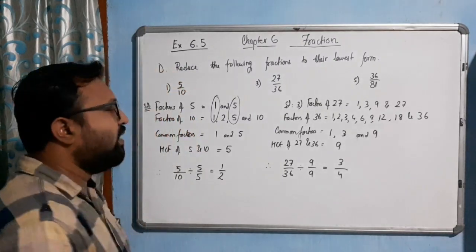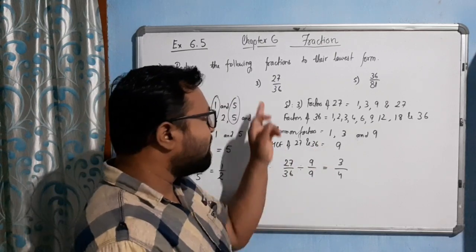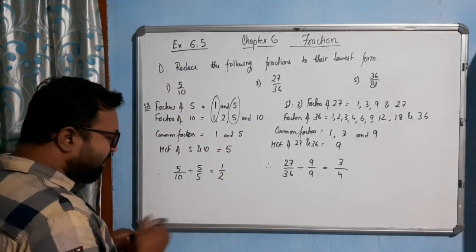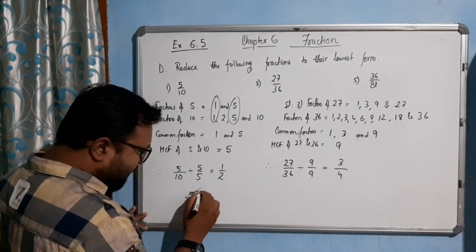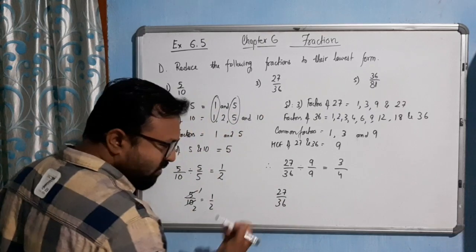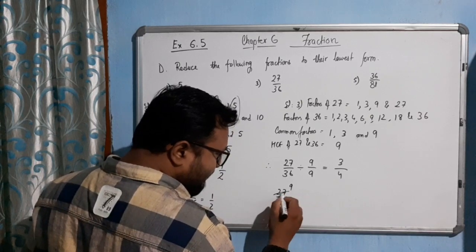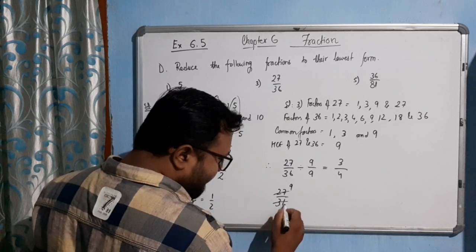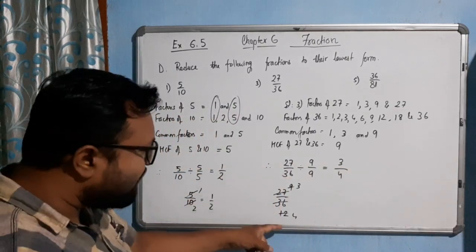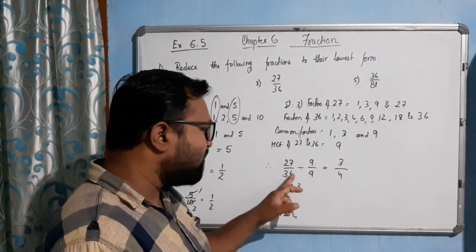I think you have understood this part — it is very easy. First find the HCF and then divide by it. You can also do this by repeated cancellation. For 5 by 10: cancel 5 from top and bottom to get 1 by 2. For 27 by 36: divide by 3 — 9 and 12 remain; divide by 3 again — 3 and 4 remain. So by repeated cancellation you also get 3 by 4.